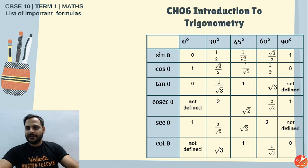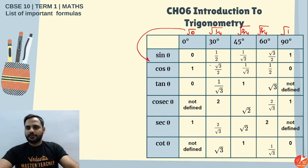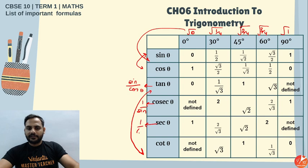The trigonometric table: for sine values, start with 0, 1/4, 2/4, 3/4, 1 and take square roots to get 0, 1/2, 1/√2, √3/2, 1 for angles 0°, 30°, 45°, 60°, 90°. Reverse all values to get cosine. Divide sine by cosine for tan values: 0, 1/√3, 1, √3, undefined. Cot is the reverse of tan; cosec is the reciprocal of sine; sec is the reciprocal of cosine.